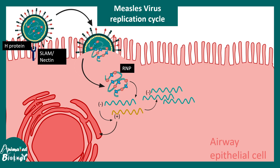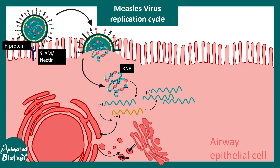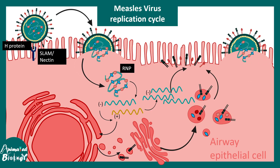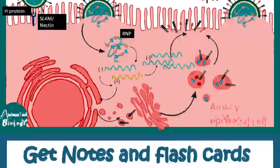The RDRP converts the negative sense RNA into positive sense RNA, and using this as a template more negative sense RNA is produced. The mRNAs produced by RDRP are translated into viral structural proteins. Eventually everything gets assembled on the cell surface and a new viral particle is released, summarizing how a negative sense RNA virus replicates.